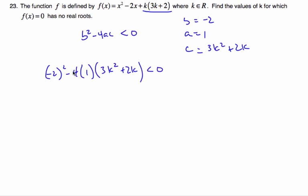Simplifying this, 4 minus 12k squared minus 8k is less than 0. So I have minus 12k squared minus 8k plus 4 is less than 0. I have to solve this inequality here.